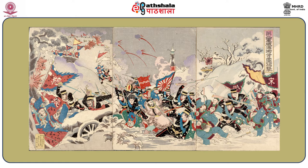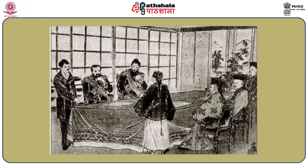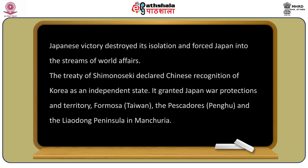Economic reasons were also strong in influencing Japan's desire to control Korea. The swift increase in industrialization in the late 19th century necessitated Japanese political leaders to look for foreign markets and natural resources. Korea's geographic position, meager population, and underdeveloped resources suited Japan's needs. Japan declared war on China on 1st August 1894, which ended with victory and the signing of the Treaty of Shimonoseki in Yamaguchi Prefecture on 17th April 1895.